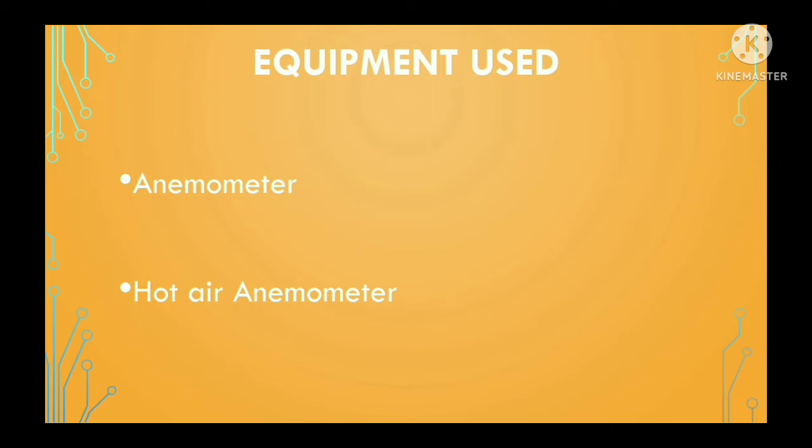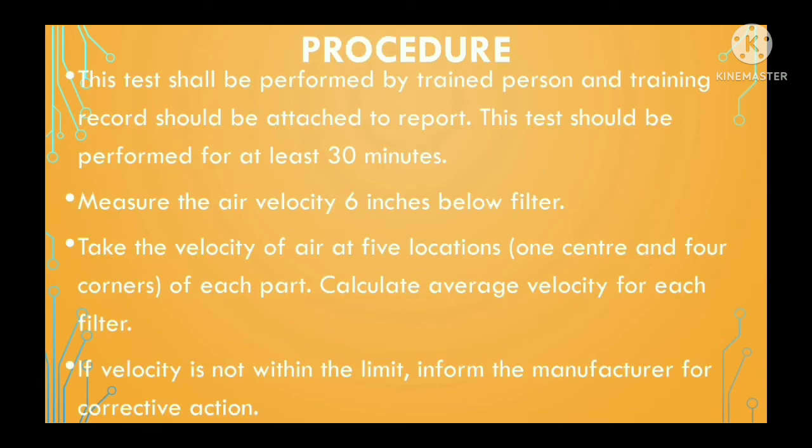The objective is to maintain continuous laminarity of HEPA filters. Next, we will see equipment required to test air velocity. We need a hot air anemometer for HEPA filters installed in hot areas and a regular anemometer for air velocity checks in regular temperature conditions.